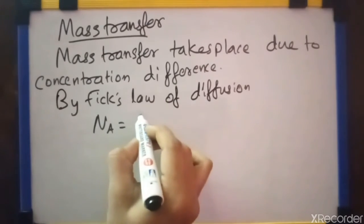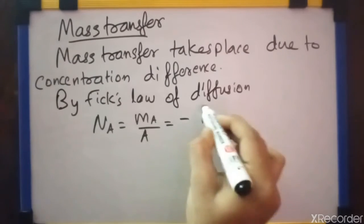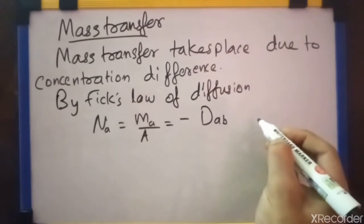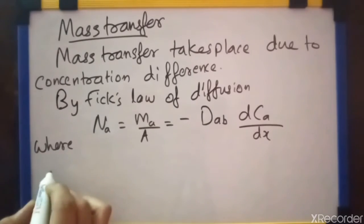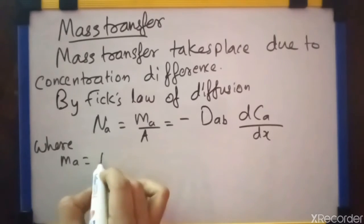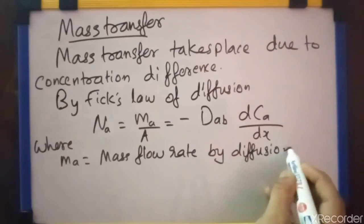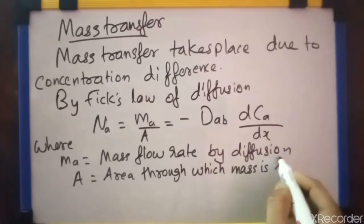na is equal to ma by a, that is equal to minus dab, this can be small a, dab into dca by dx, where ma is the mass flow rate by diffusion, a is the area through which mass is flowing, maybe a duct or a pipe or something like that.